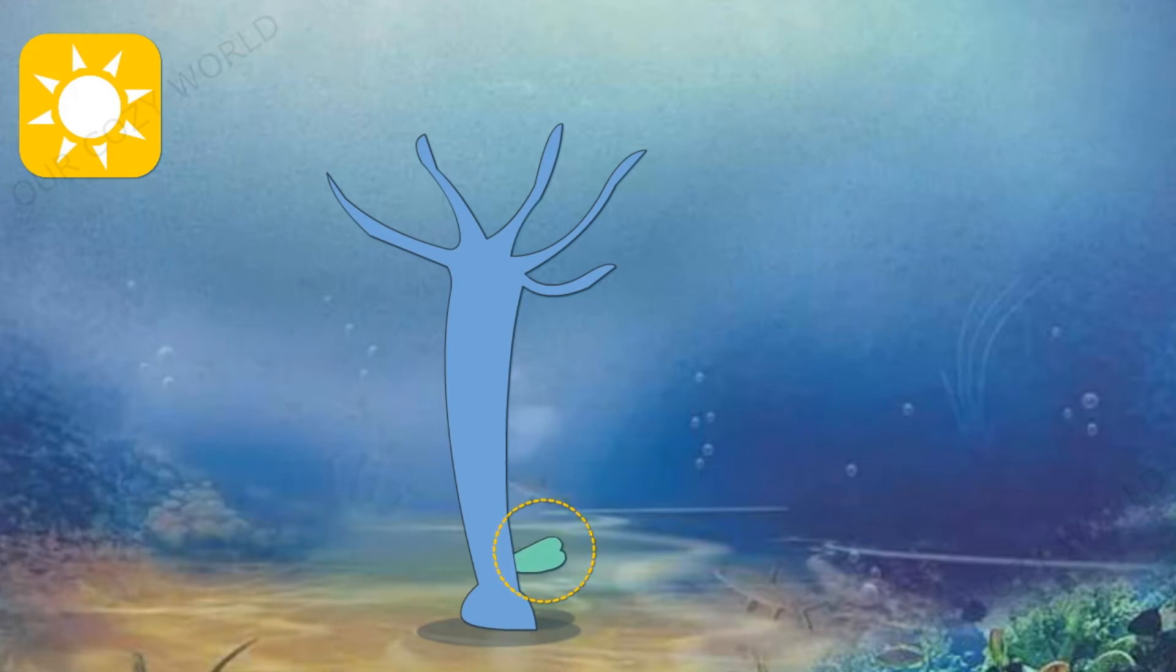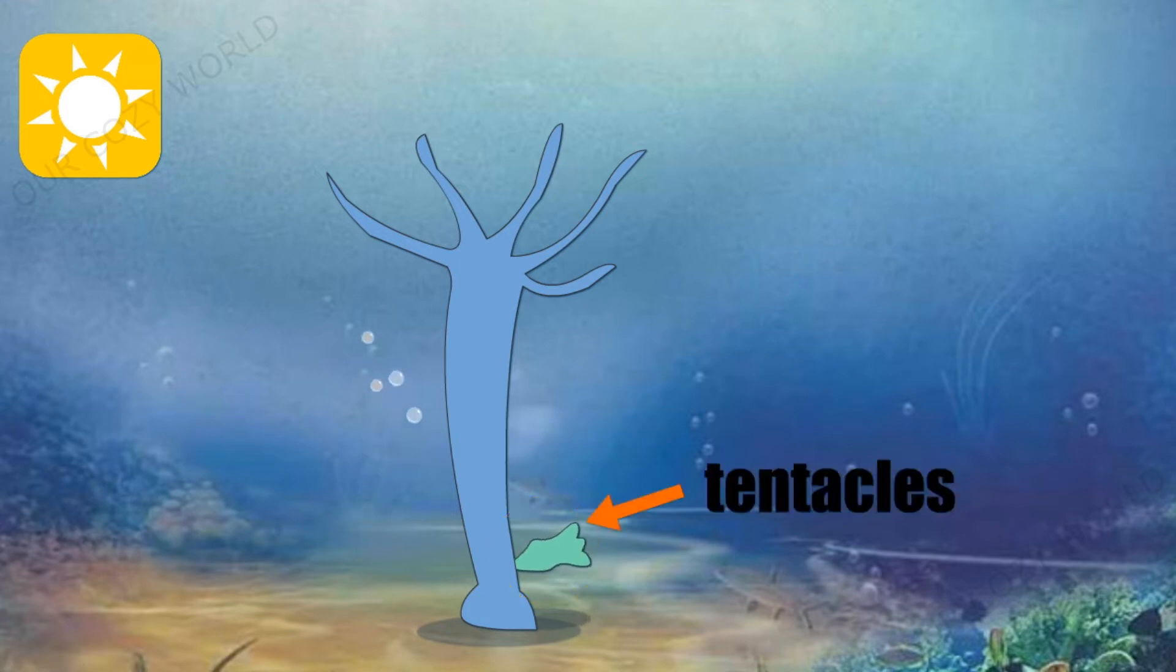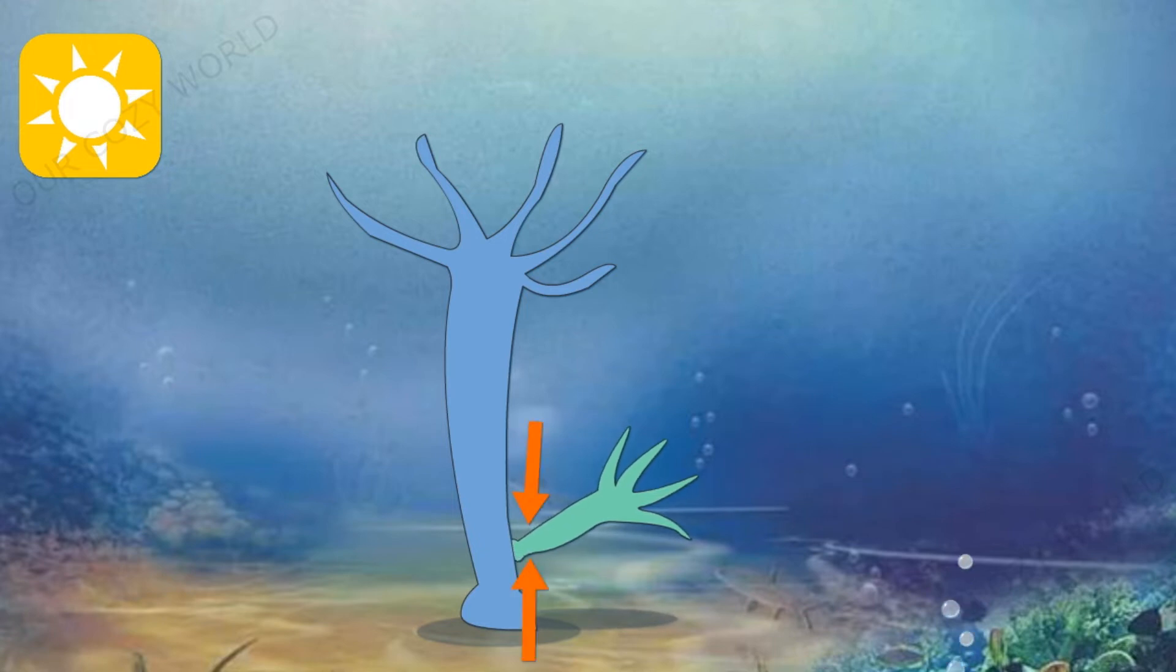The Hydra reproduces in two ways depending on the season. In summer, Hydras reproduce asexually by budding. The buds form from the body wall and grow into miniature adults complete with a mouth and tentacles. Then they break away when mature.